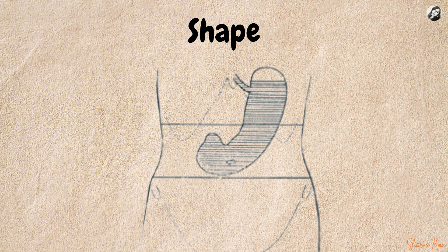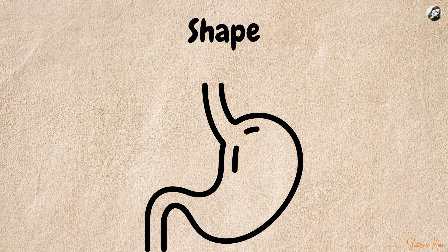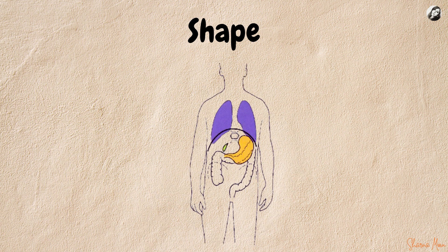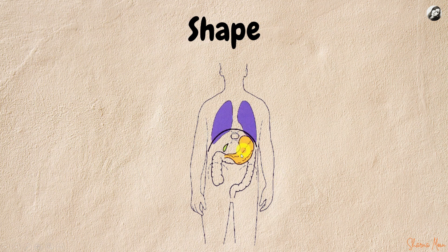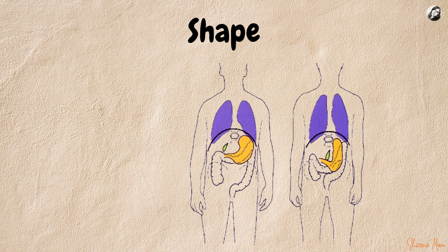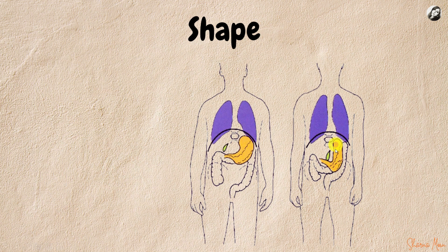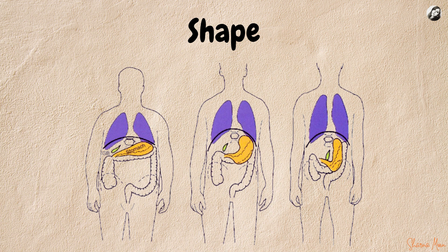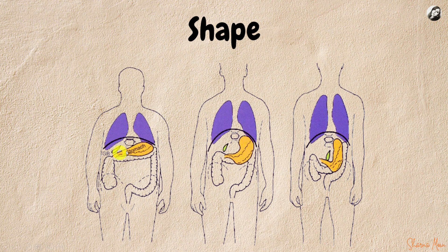Now let us look at the shapes of the stomach. In a cadaver, the stomach is sickle-shaped. In the living, the stomach is mostly J-shaped. Clinically, the stomach presents three types of shapes. Number one is the asthenic, or normal type, where the longer limb of the J is slightly oblique. Then we have the hyposthenic type, where the longer limb of the J is mostly vertical — these people are more susceptible to gastric ulcer, and they are usually thin and tall persons. Then we have the hypersthenic type, where the longer limb of the J is very oblique — these people are prone to develop duodenal ulcer, and they are usually short and stocky individuals.